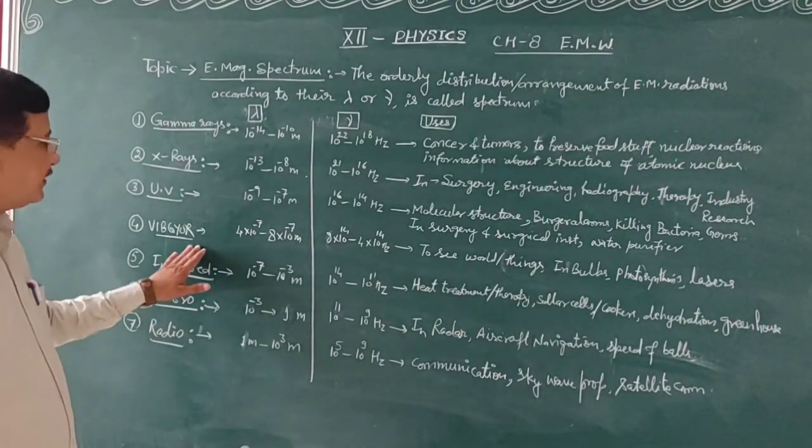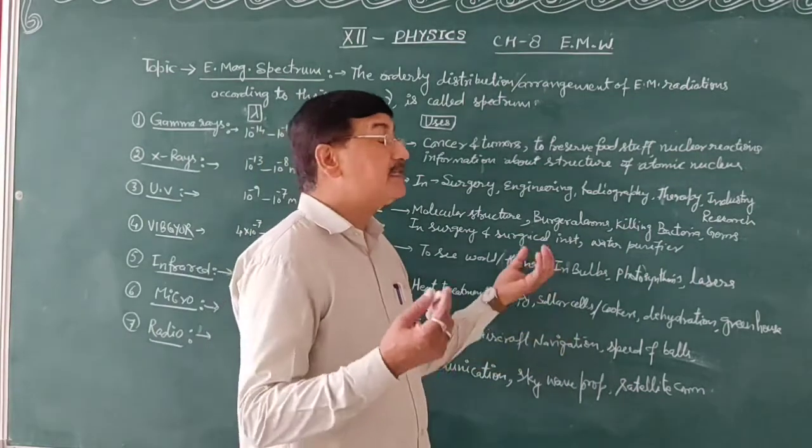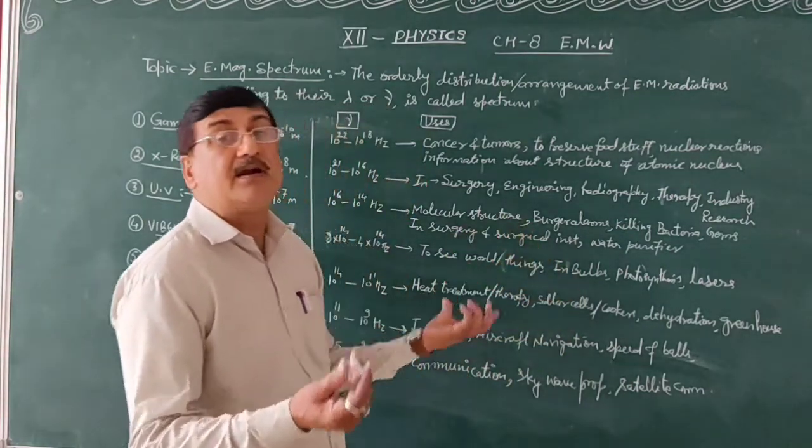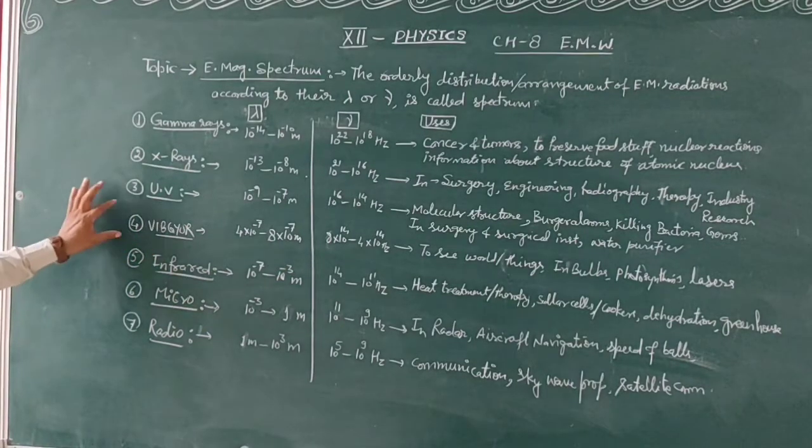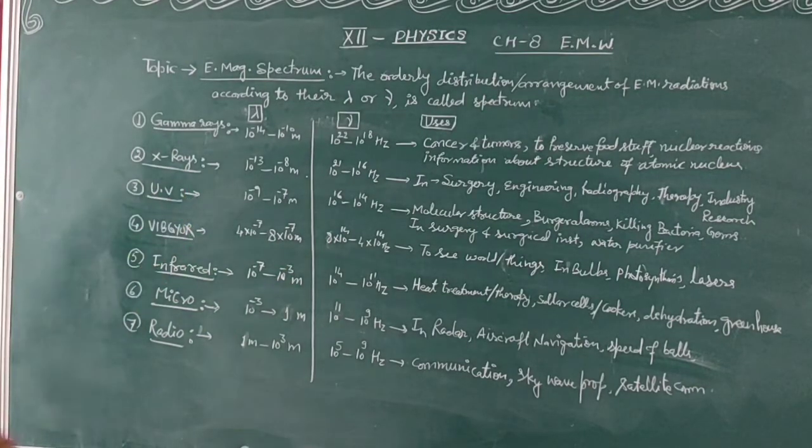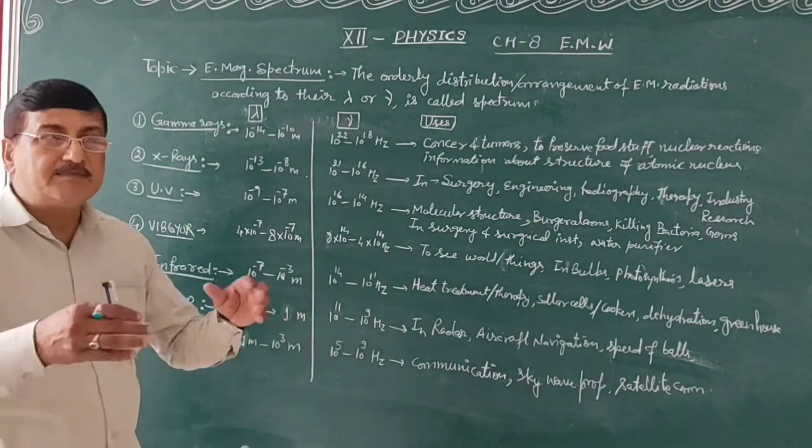Visible light is used in photosynthesis, laser rays, and in bulbs. This is the most useful and most of the time you can see it in front and around us, which we can see.